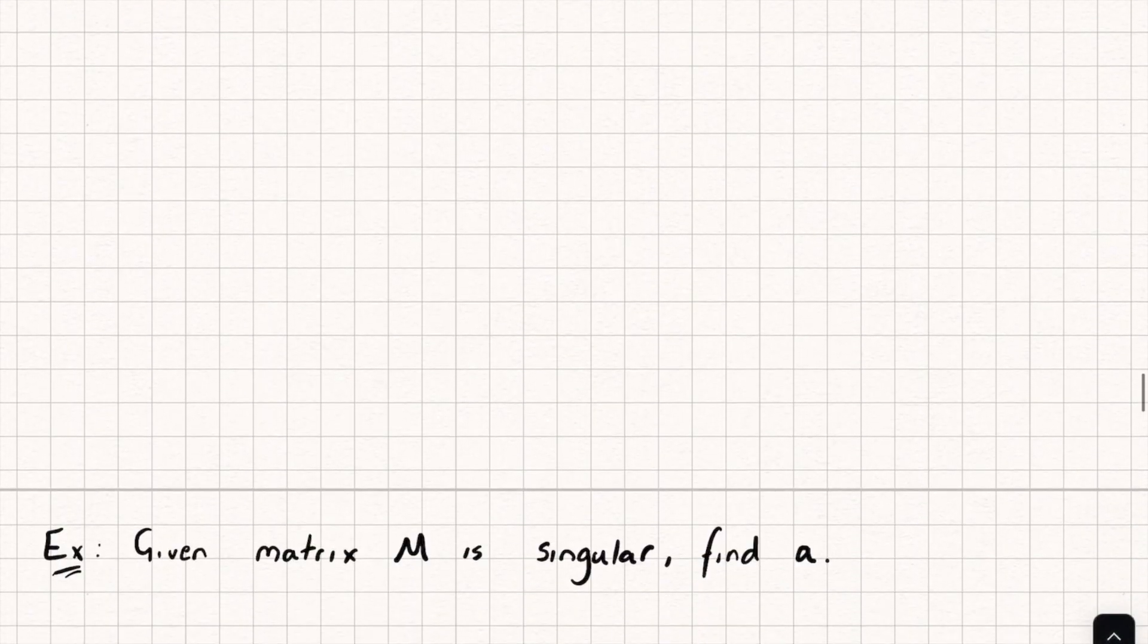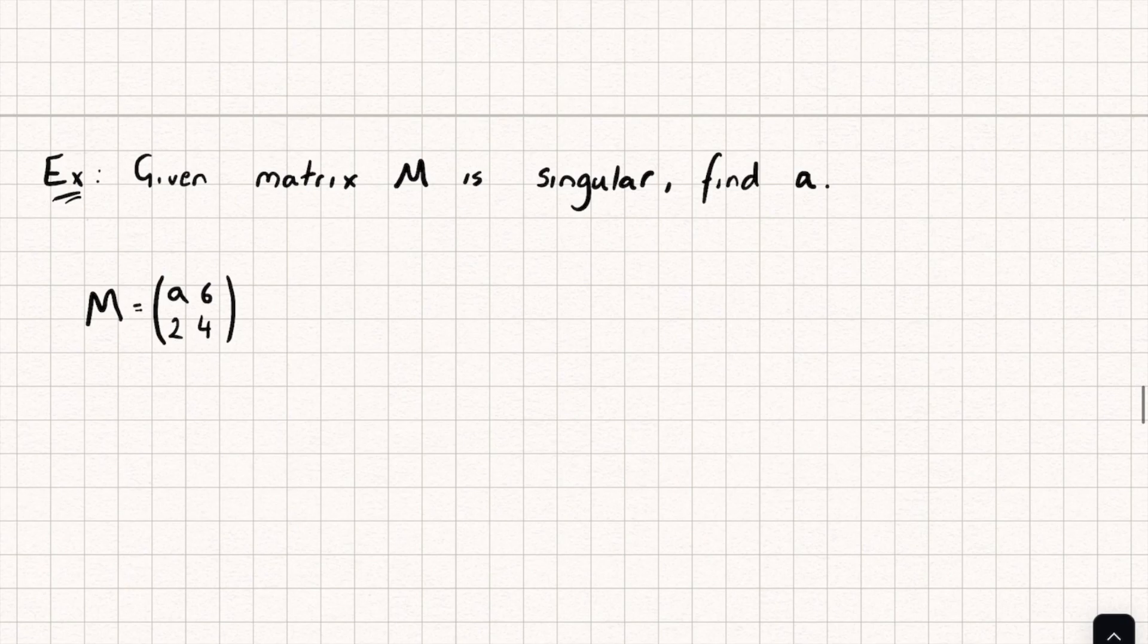Let's have a look at one final example, where it says, given matrix M is singular, find A. We can see matrix M is equal to this thing here. So let's find the determinant. The determinant of M is going to be equal to A multiplied by 4, subtract 2 multiplied by 6.